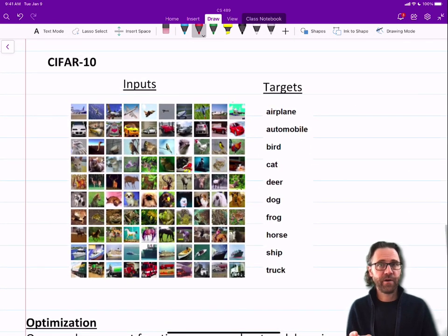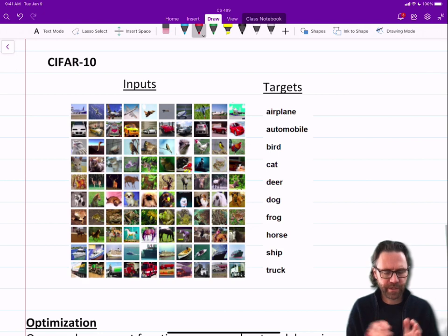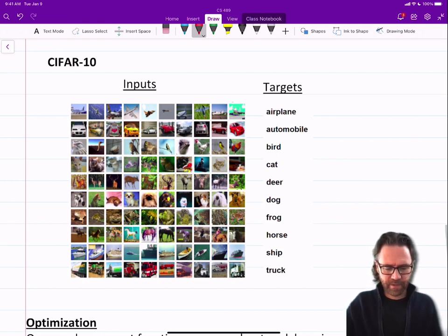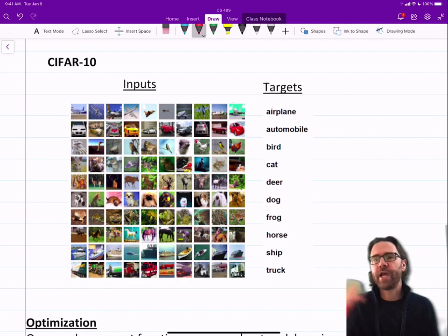So in this case, again, we have a bunch of images, and in CIFAR-10 at least, there are ten different classes. So these images fall into ten different classes.